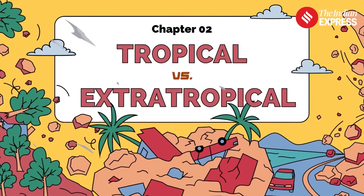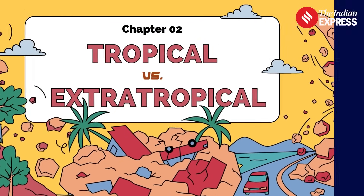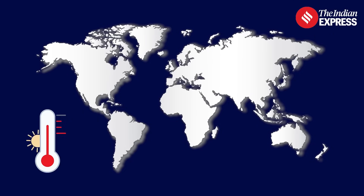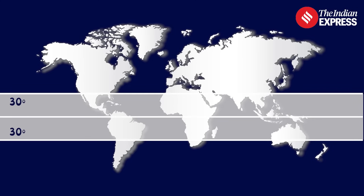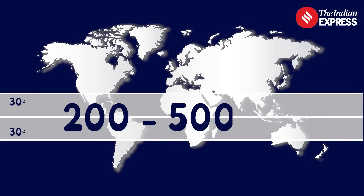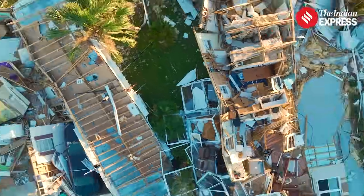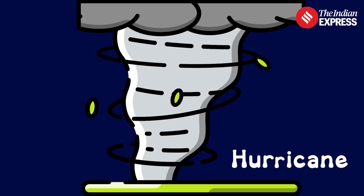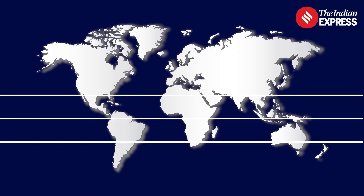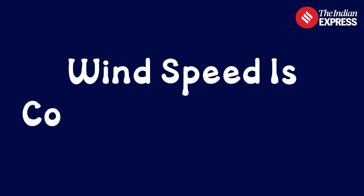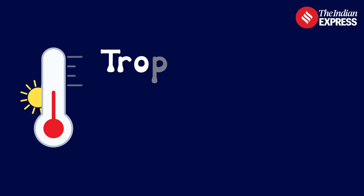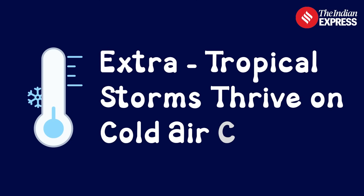That is tropical versus extra-tropical storms — two types of large-scale storms. Tropical storms form over warm ocean waters near the equator, between 0 degrees and 30 degrees north and south. They typically range between 200 to 500 kilometers in diameter but are more destructive because of heavy wind speed and high pressure difference. Think hurricanes, cyclones and typhoons. Extra-tropical storms form outside the tropics, between 30 and 65 degrees, driven by temperature differences. Their diameter is bigger than 500 kilometers but wind speed is comparatively less. Quick fact: tropical storms feed on warm water; extra-tropical storms thrive on cold air clashes.